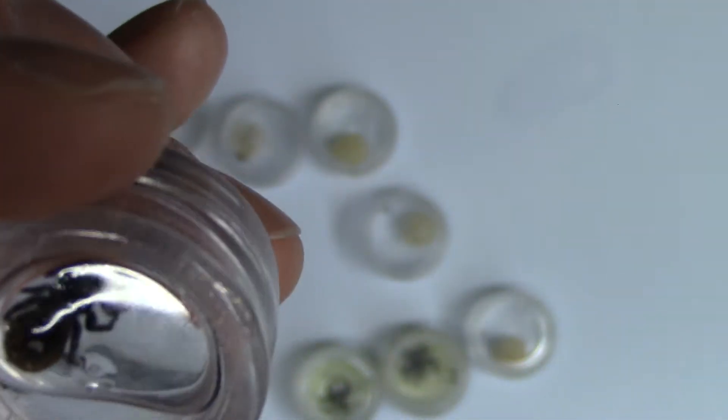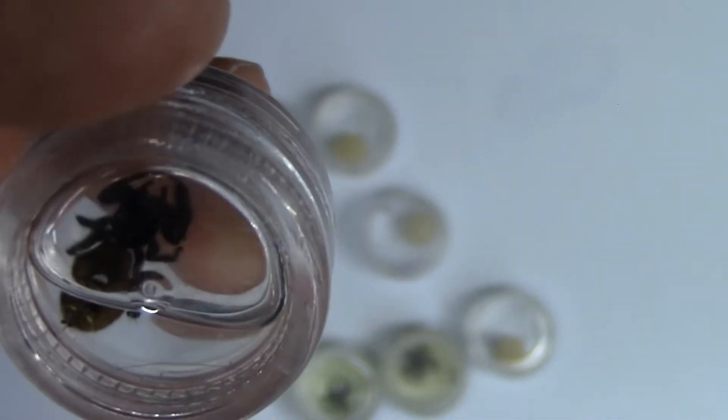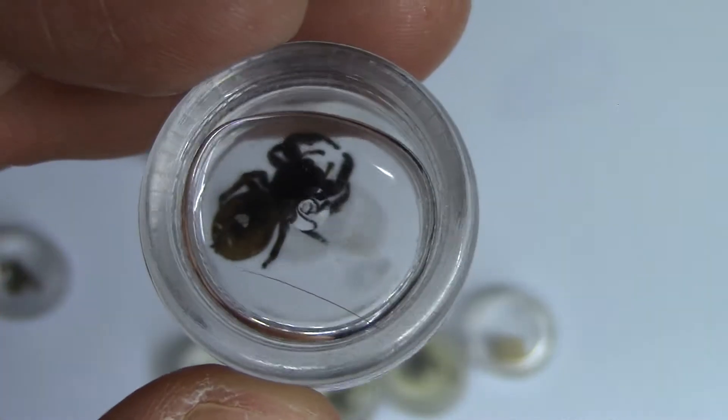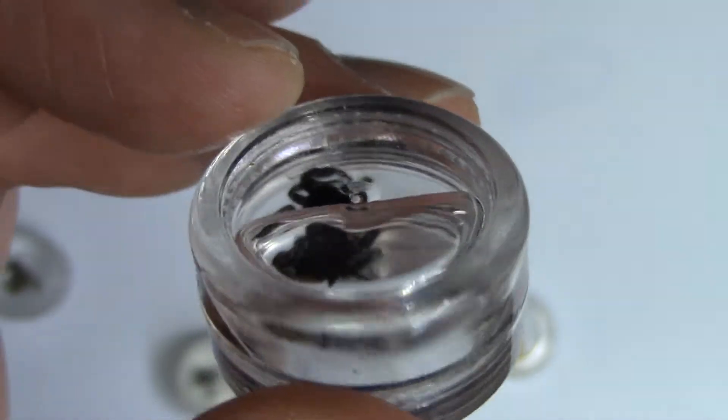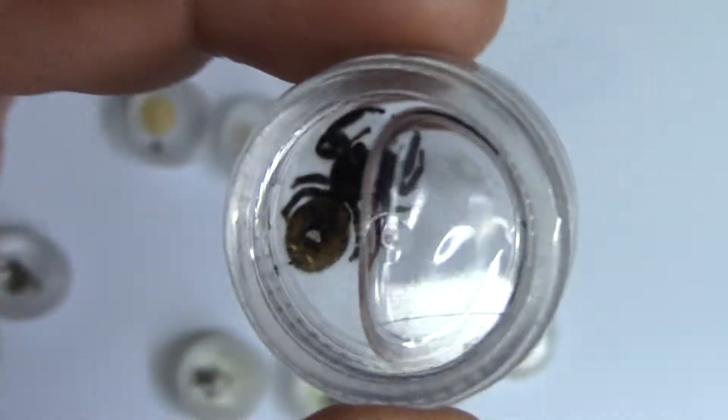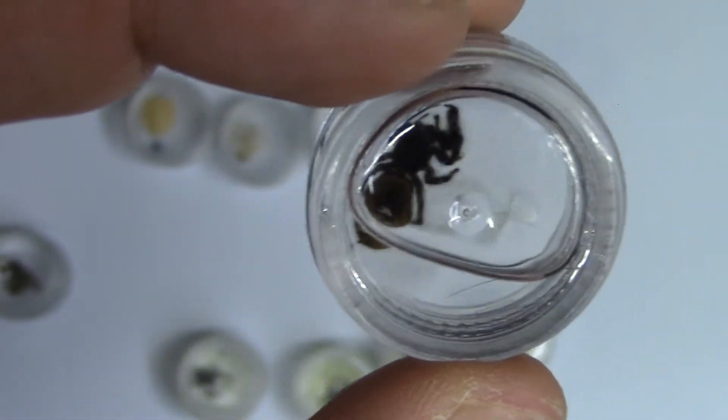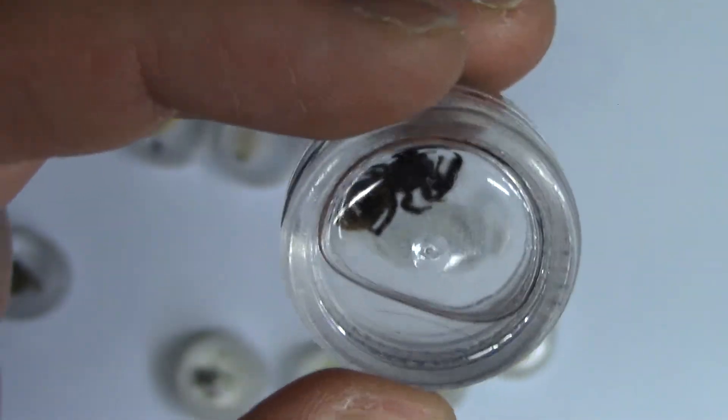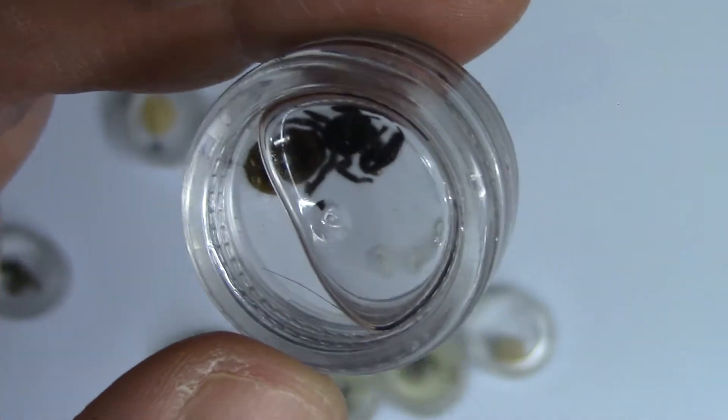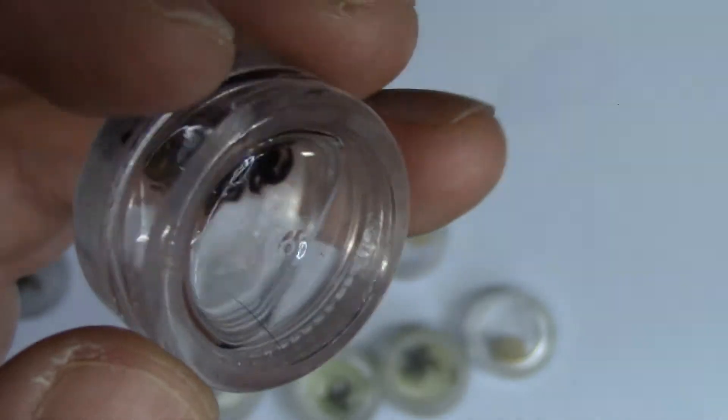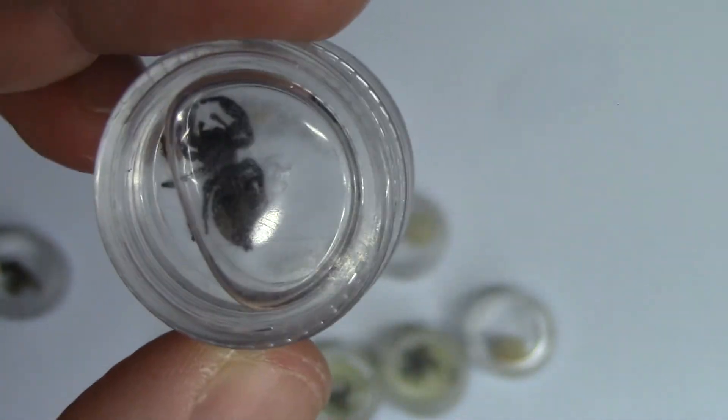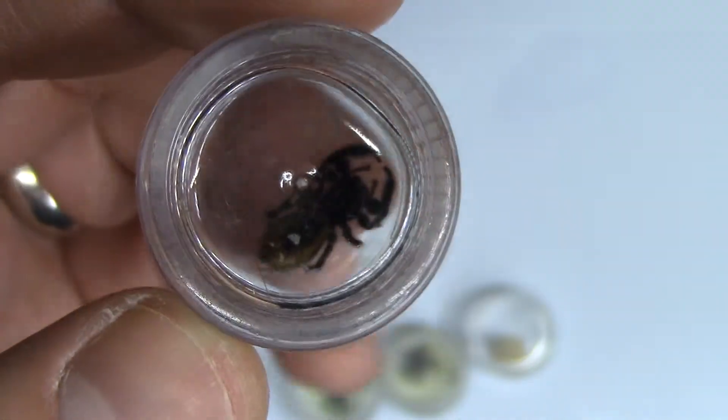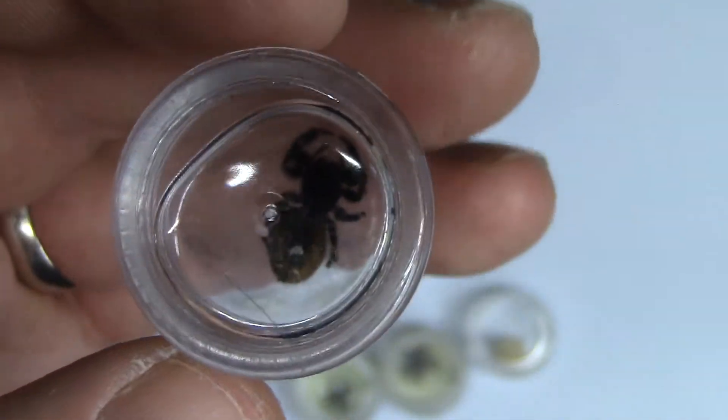This also preserves the fine hairs that the alcohol kind of, the acid or whatever properties of alcohol kind of seems to burn it up and eliminate it. So, and also, it kind of dehydrates the specimen where the abdomen will kind of deflate. Whereas this one, it's just as large as when I put it in over a year ago.